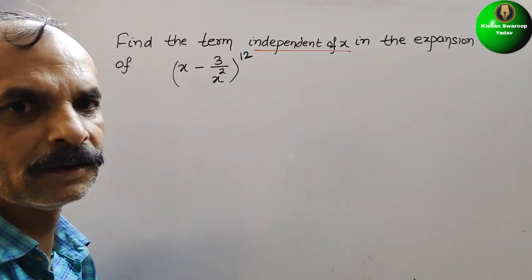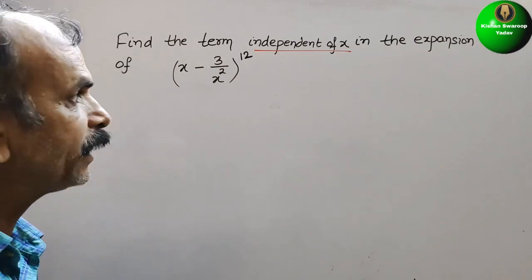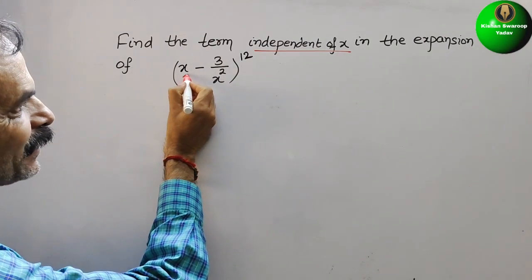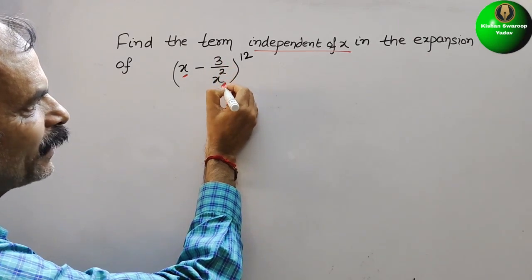How we can find it out? Need not to expand this. You can see here first term x is there and the second term if you see it, 3 by x square is there.